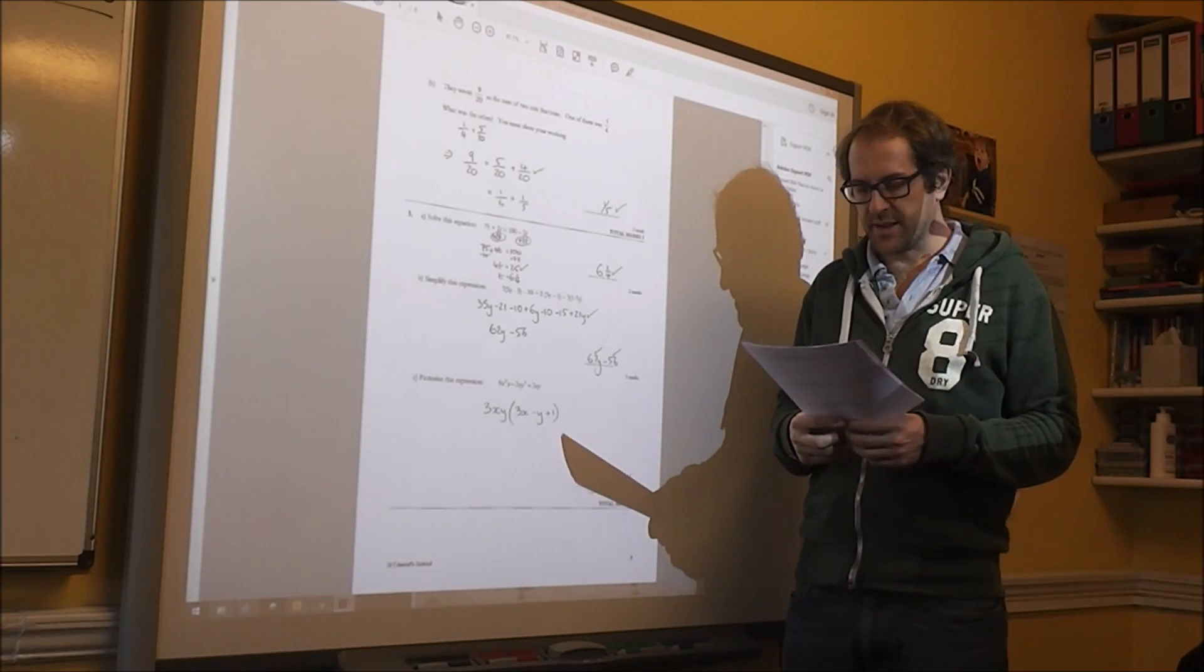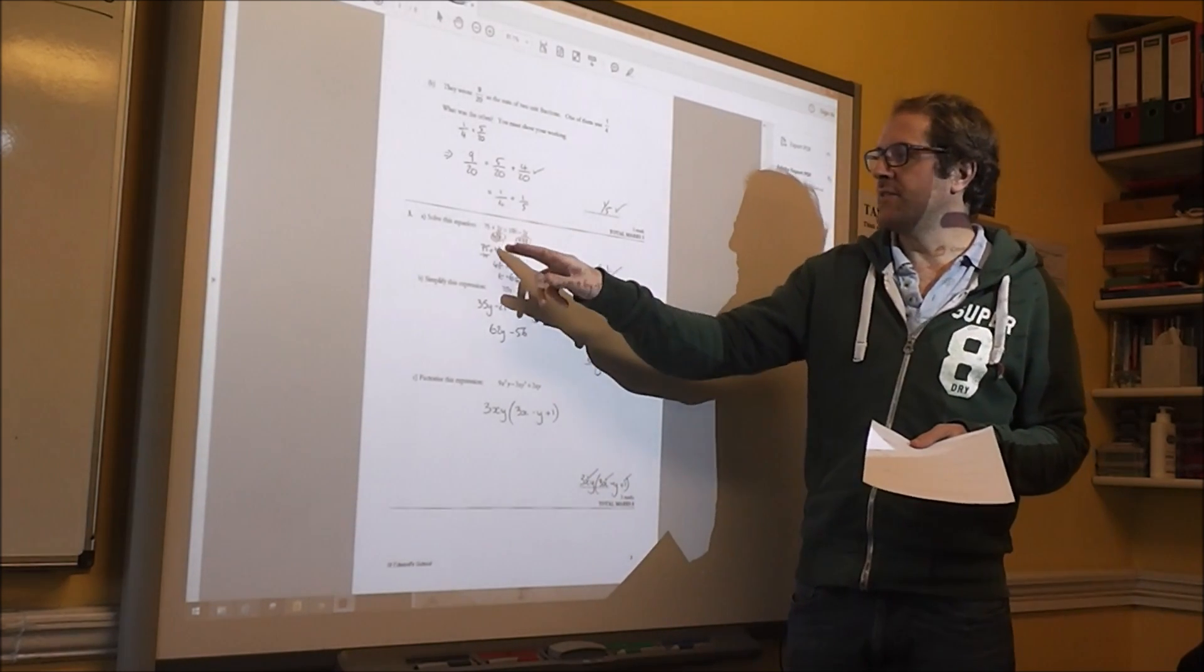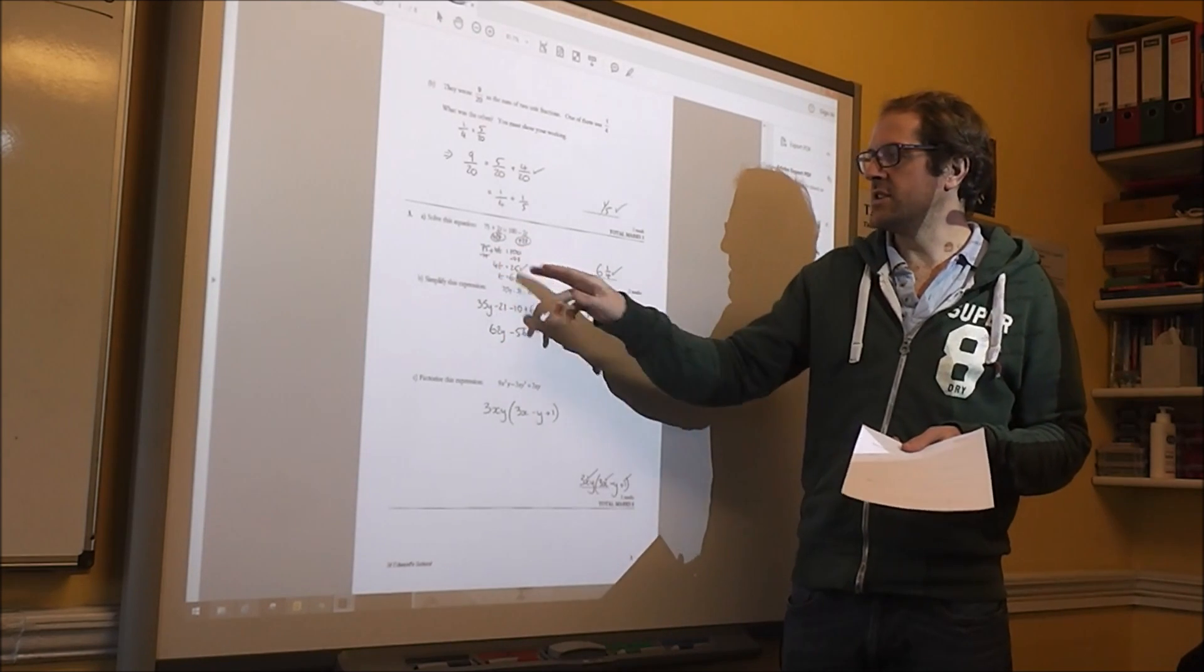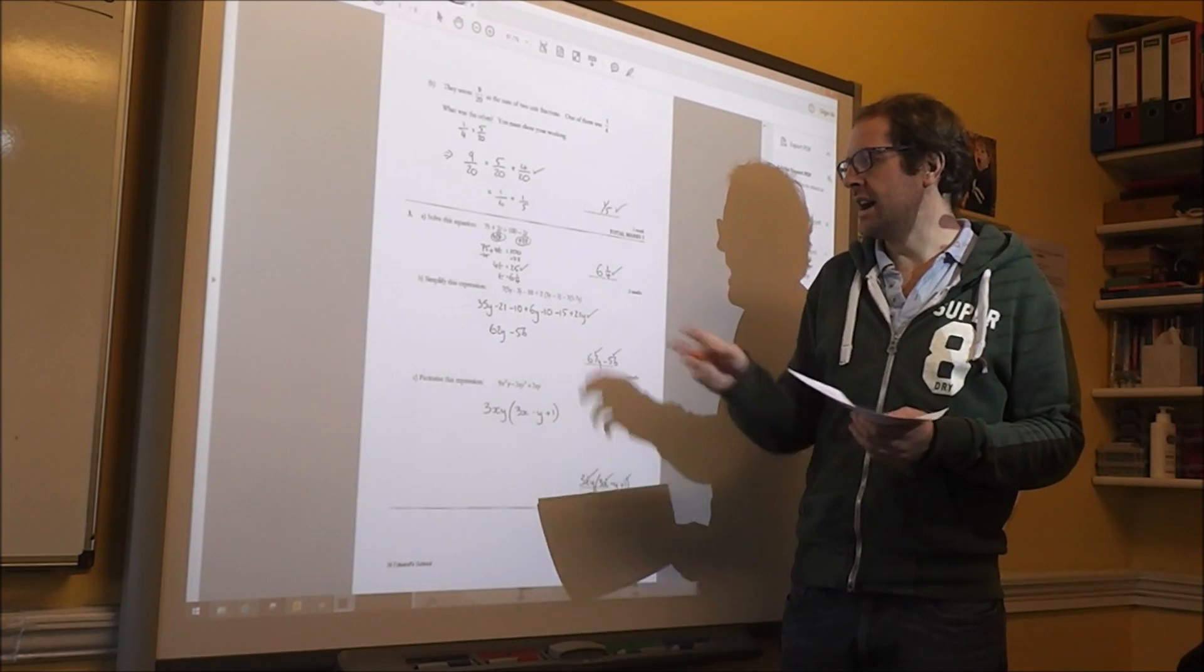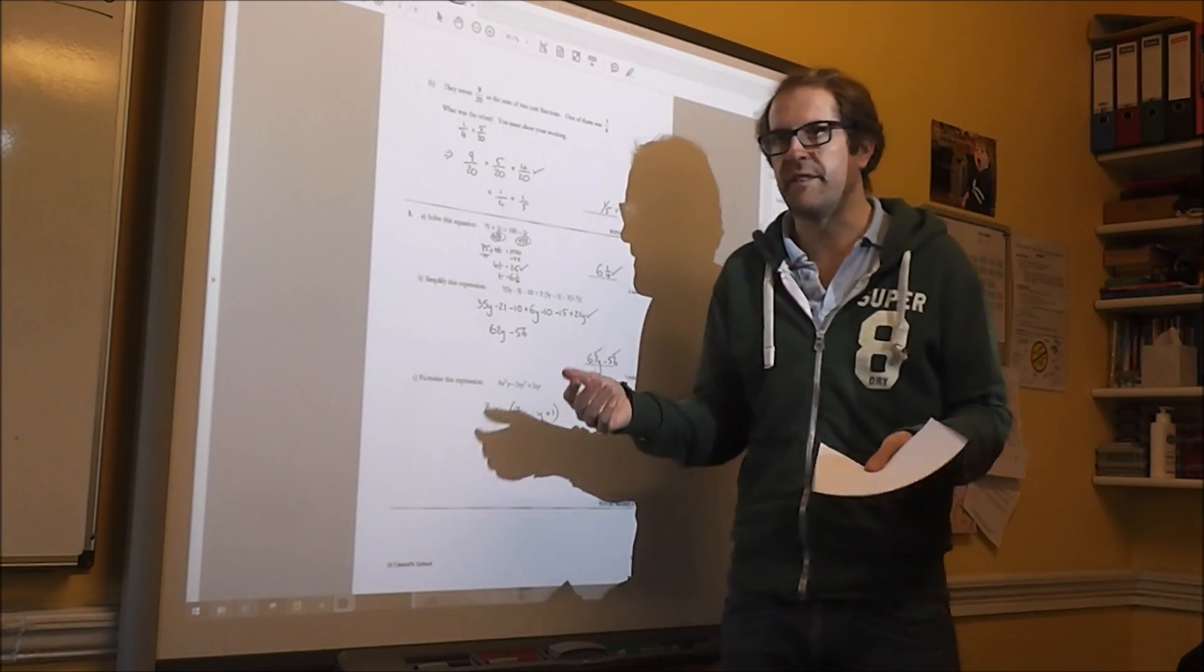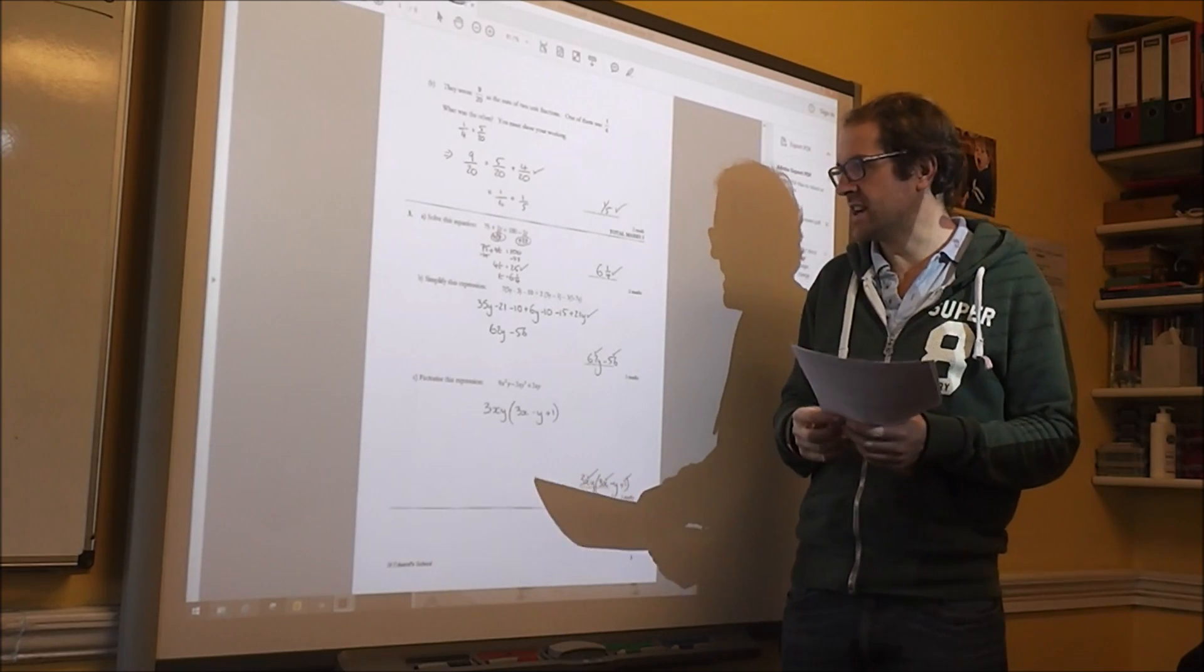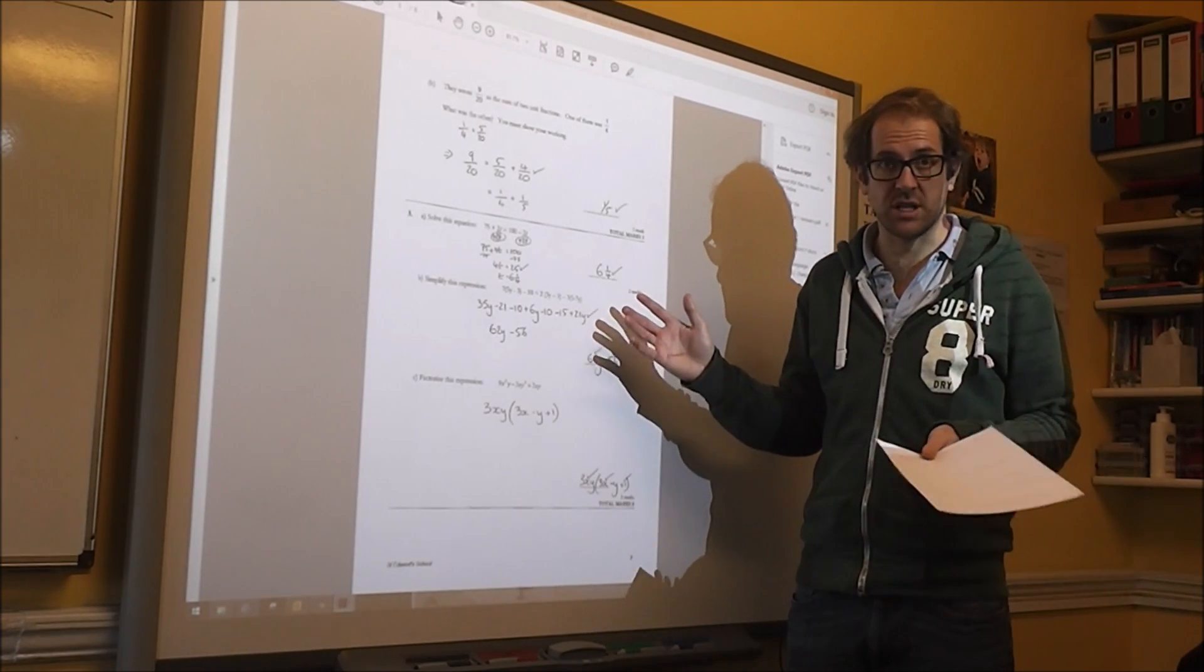Question three is equations and simplifying. So part one, get your variables on the left and your numbers on the right. Leave it as a mixed number, 6 and 1 quarter. I'm sure it wouldn't be wrong if it was 6.25. I generally prefer to put it as a fraction, especially if it's not quarters or halves.